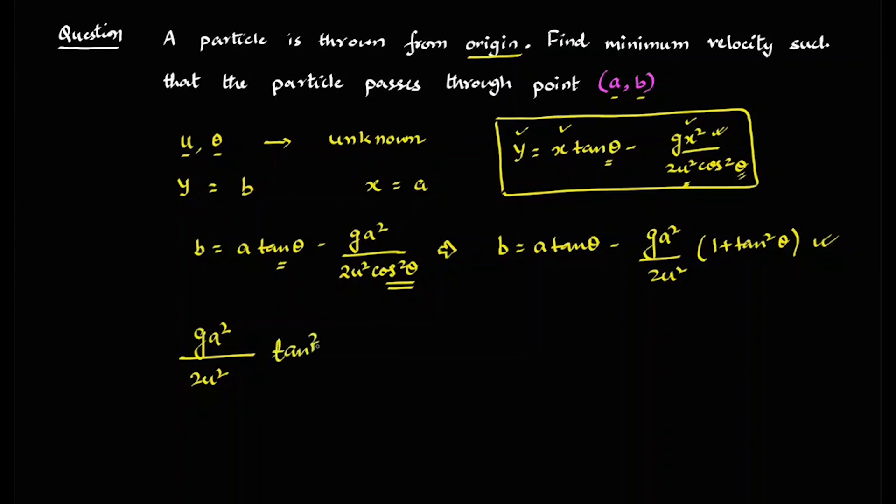So it will be tan square theta. I'm just rearranging everything. G A square by 2U square tan square theta minus A tan theta plus B plus G A square by 2U square. So this is equal to zero.